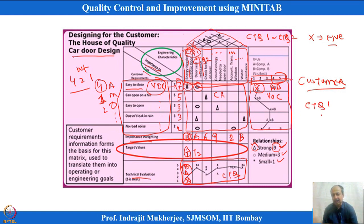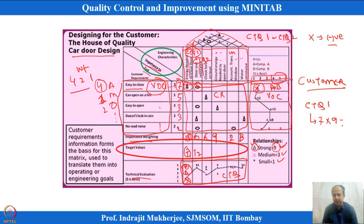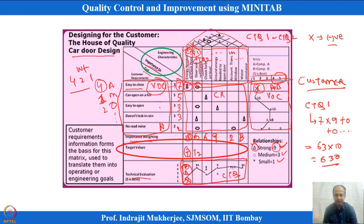The total score for CTQ 1 is the summation of (voice importance × relationship rating) across all voices, multiplied by the engineer's importance rating. With 7 × 9 = 63 and all other voices contributing 0, the summation is 63. Multiplied by the importance rating of 10, the overall score for CTQ 1 comes out to approximately 630.